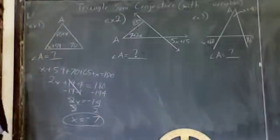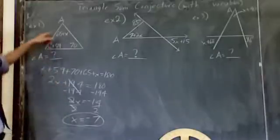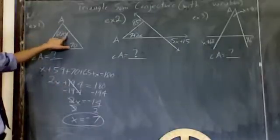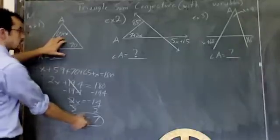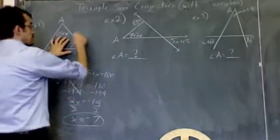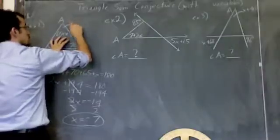So I'm almost done. I still have to plug x in. I want to know what angle A is. So instead of 65 plus x, now it says 65 plus negative 7. And 65 plus negative 7, that means this is 58 degrees.